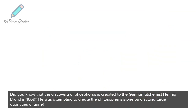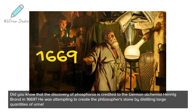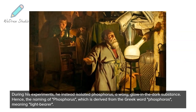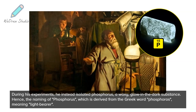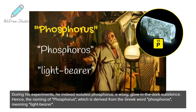Did you know that the discovery of phosphorus is credited to the German alchemist Hennig Brand in 1669? He was attempting to create the Philosopher's Stone by distilling large quantities of urine. During his experiments, he instead isolated phosphorus — a waxy, glow-in-the-dark substance. Hence, the naming of phosphorus, which is derived from the Greek word phosphoros, meaning light-bearer.